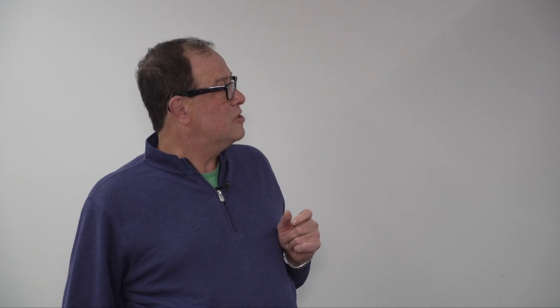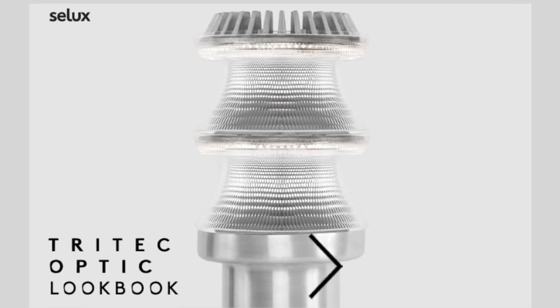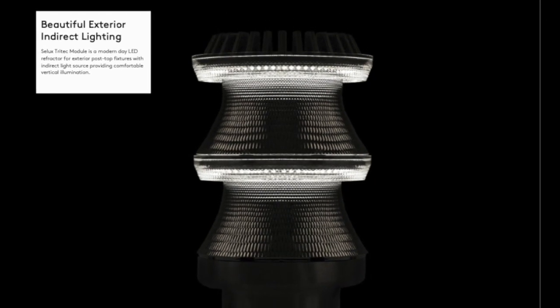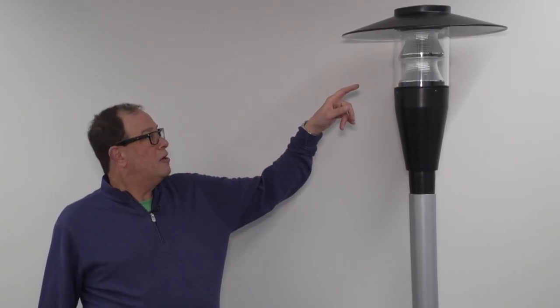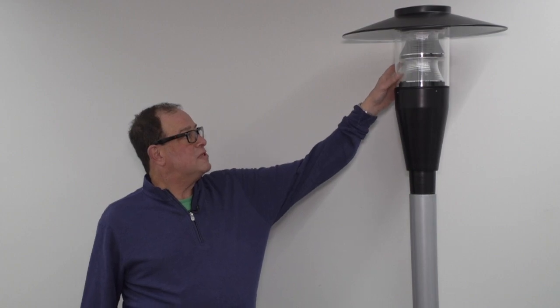At the heart of the ELO is the scalable tri-tech refractor system that allows for up to 12,000 lumens in a column. The tri-tech module provides indirect light in all of these products and allows for up to four different stacks within a product.